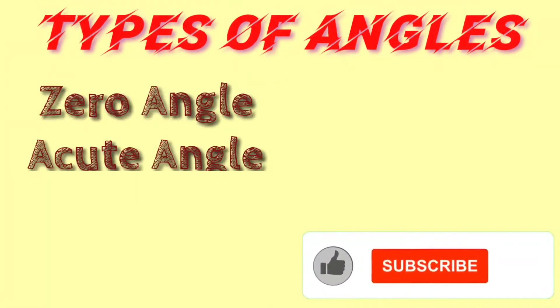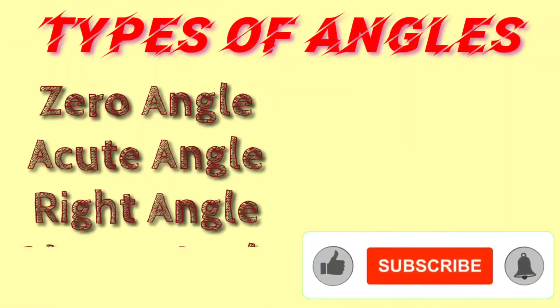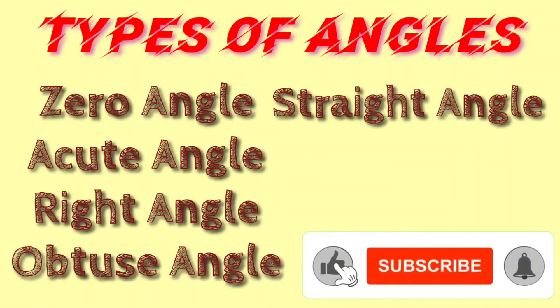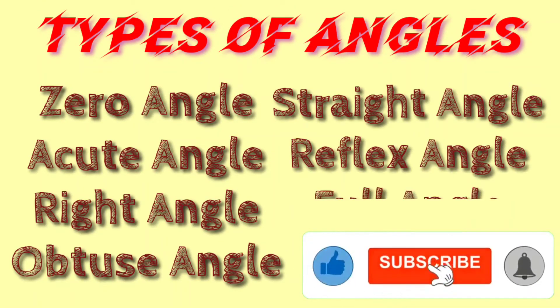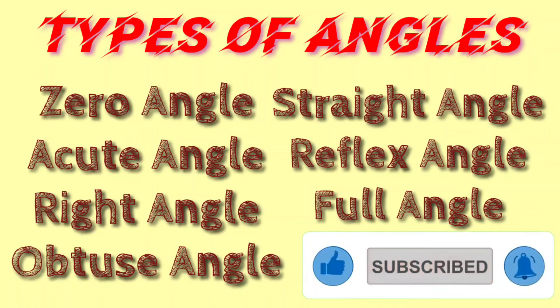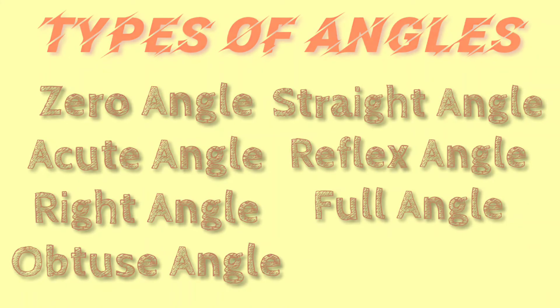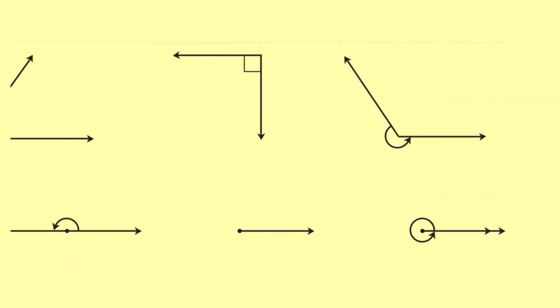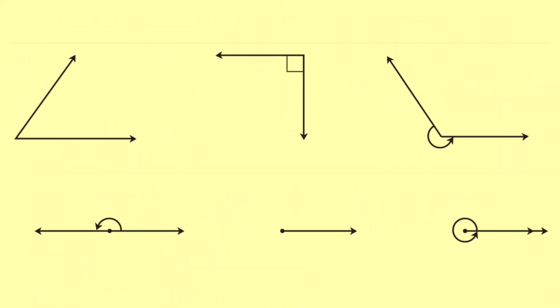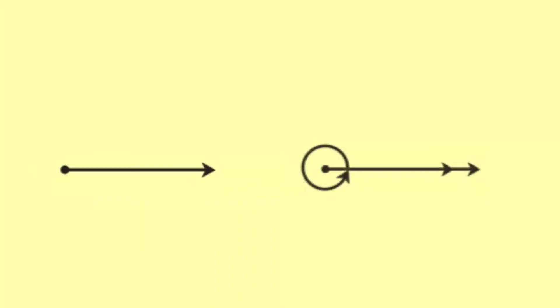Now we have studied all types of angles. Next, by looking at a given angle figure, we should be able to identify what type of angle it is. Let's start the practice of identifying angles from figures.